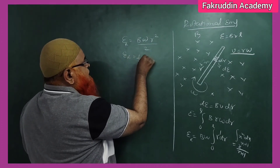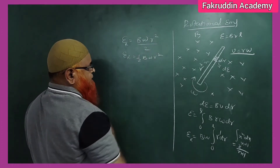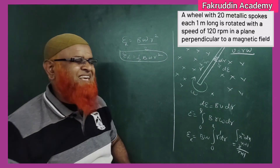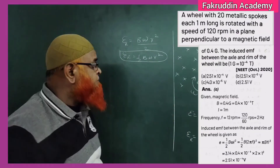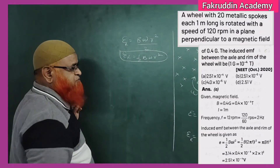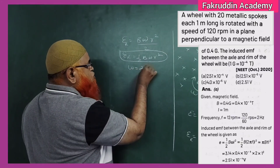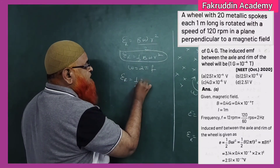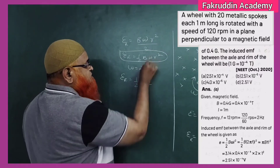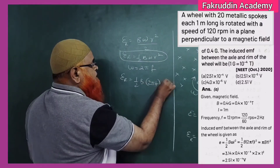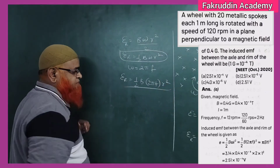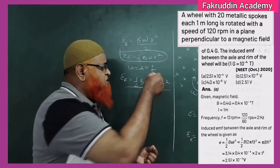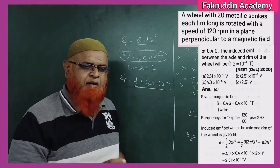The formula for Rotational EMF is ½·B·ω·r². Based on this formula there is one NEET problem. Since ω = 2πf, the Rotational EMF can also be written as ½·B·2πf·r². All the values are given in the problem, so you just substitute and get the answer — it's very simple.